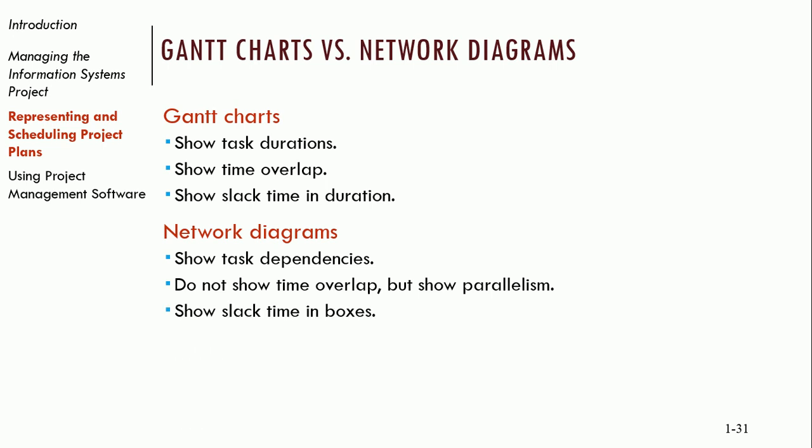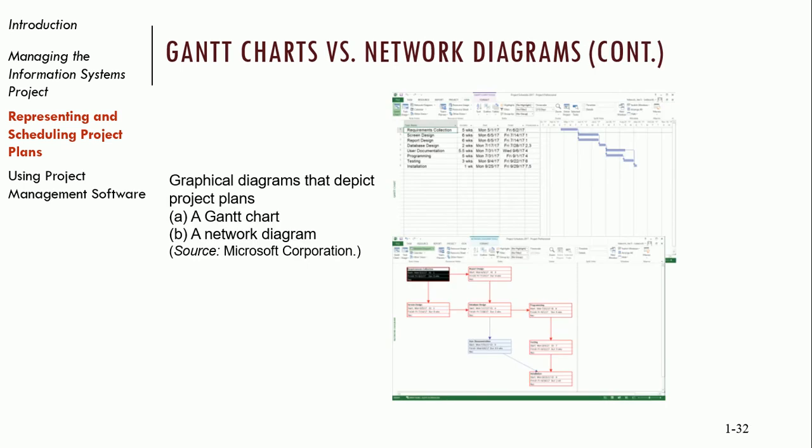All we care about is which tasks can be completed in parallel and what tasks rely on a previous task — what task has to be completed before we can start the next one. We could show slack time in boxes, but that's not typical. Here are two examples: the one on top is a Gantt chart, the one on the bottom is a network diagram — both from Microsoft Project, which I'll talk about towards the end of the slide deck.